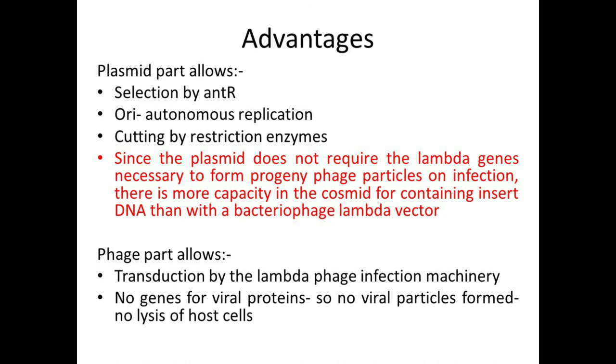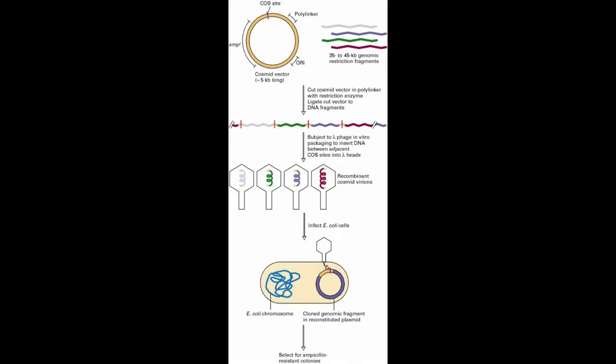The plasmid part also enables cutting of the vector with commonly used restriction enzymes. The most important attractive property of the phage part is that it allows the foreign DNA to be inserted into the host cell through natural transduction by the lambda phage infection machinery — behaving like a bacteriophage even though it contains plasmid DNA. This means we simply allow the bacteriophage to infect the bacterial cell, so the DNA enters easily without requiring other procedures. Usually it is not easy to make a plasmid enter a host bacterial cell, but in phage form it enters by itself through its infection machinery.